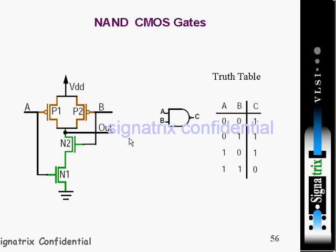When you are applying zero, one — suppose A is zero — during that time this PMOS is ON and the other is OFF, so the output load capacitance will charge through this point. When your input is A is 1 and B is 0, during that time that PMOS transistor is ON, so your output load is getting charged through that path.